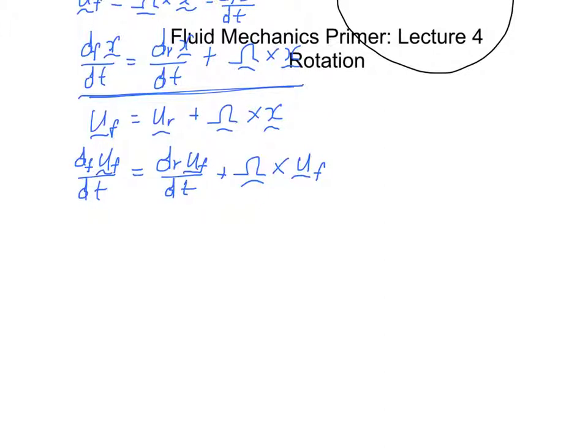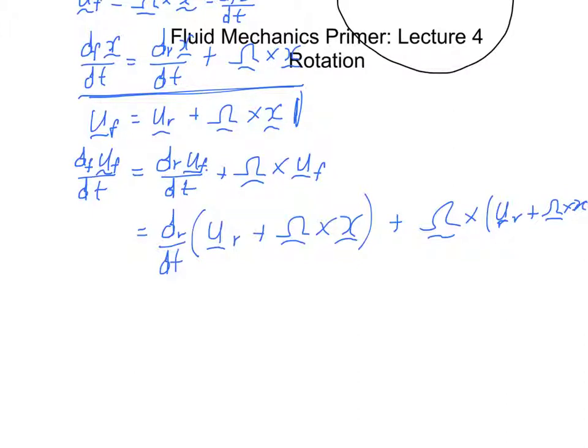Let's move this up here. I want to continue with this equation. What I can then do is take this uf and substitute in from this equation here. So that gives me dr/dt of (ur plus omega cross x) plus omega cross (ur plus omega cross x).